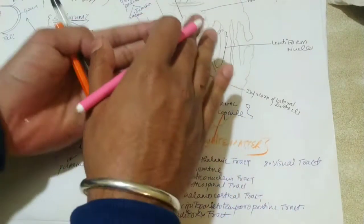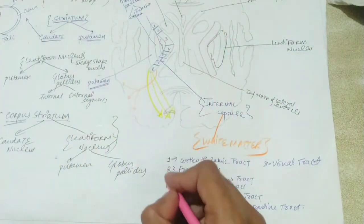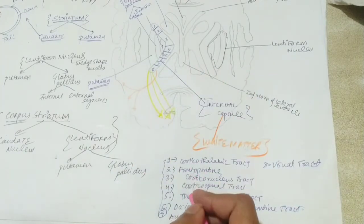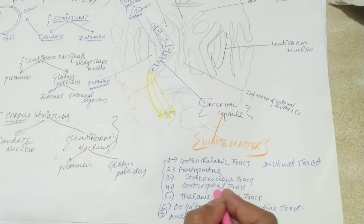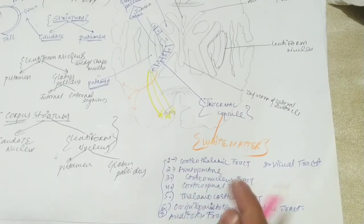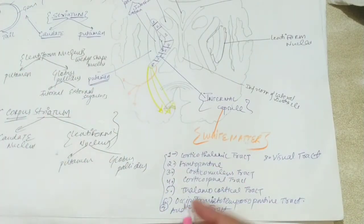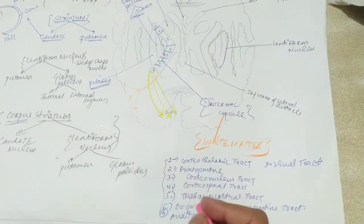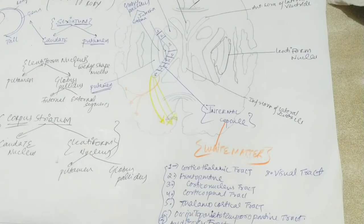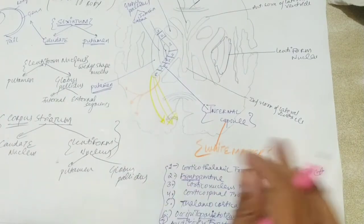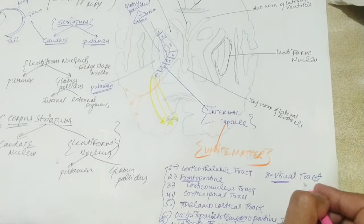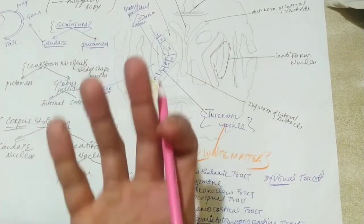These are the fibers you will see just above this basal ganglia — tract fibers coming from different sections. The corticothalamic fibers come from cortex to thalamus; the frontopontine tract comes from the frontal lobe going to the pons nuclei; the corticonuclear tract goes from cortex to the nuclei of cranial nerves; the corticospinal tract goes from cortex to the spinal cord; the thalamocortical tract takes execution fibers from thalamus back to the cortex for planning of movements. The occipito-parietotemporopontine tract takes fibers from occipital, parietal and temporal regions to the pons and on to the cerebellum.